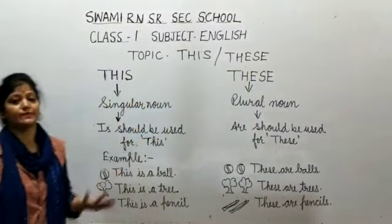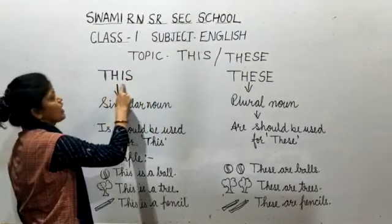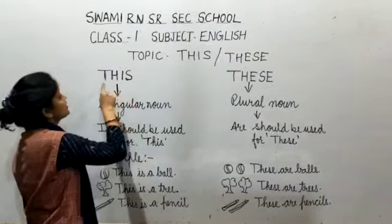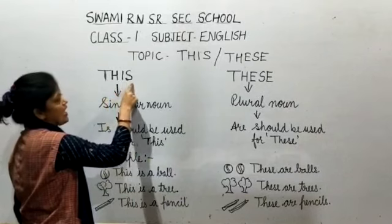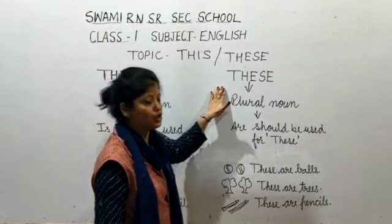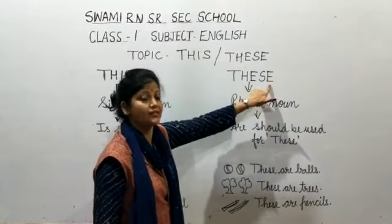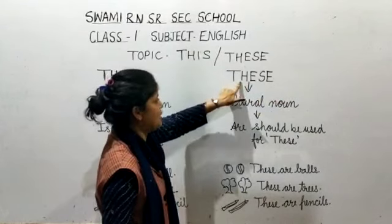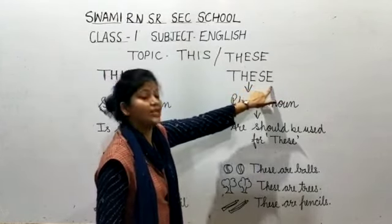First, all of you speak the spelling of 'this': T-H-I-S, this. And 'these': T-H-E-S-E, these.